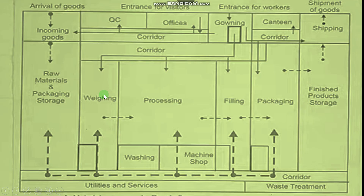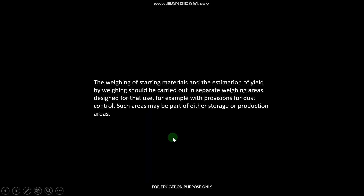Weighing is very important in any pharmaceutical house, which is why we saw it in the layout first. Weighing areas are very important areas. The weighing of starting materials and the estimation of yield by weighing should be carried out in separate weighing areas designed for that use, for example with provisions for dust control. A complete system will be in place for weighing areas — we will see how dust is controlled and contamination is prevented in weighing areas.